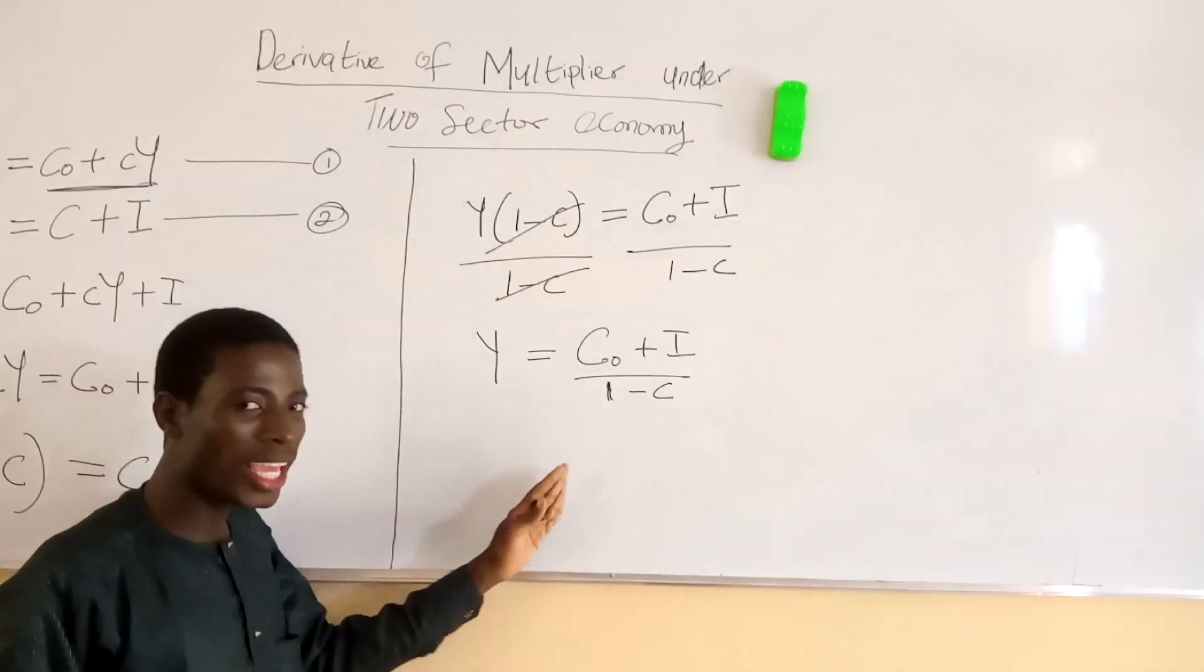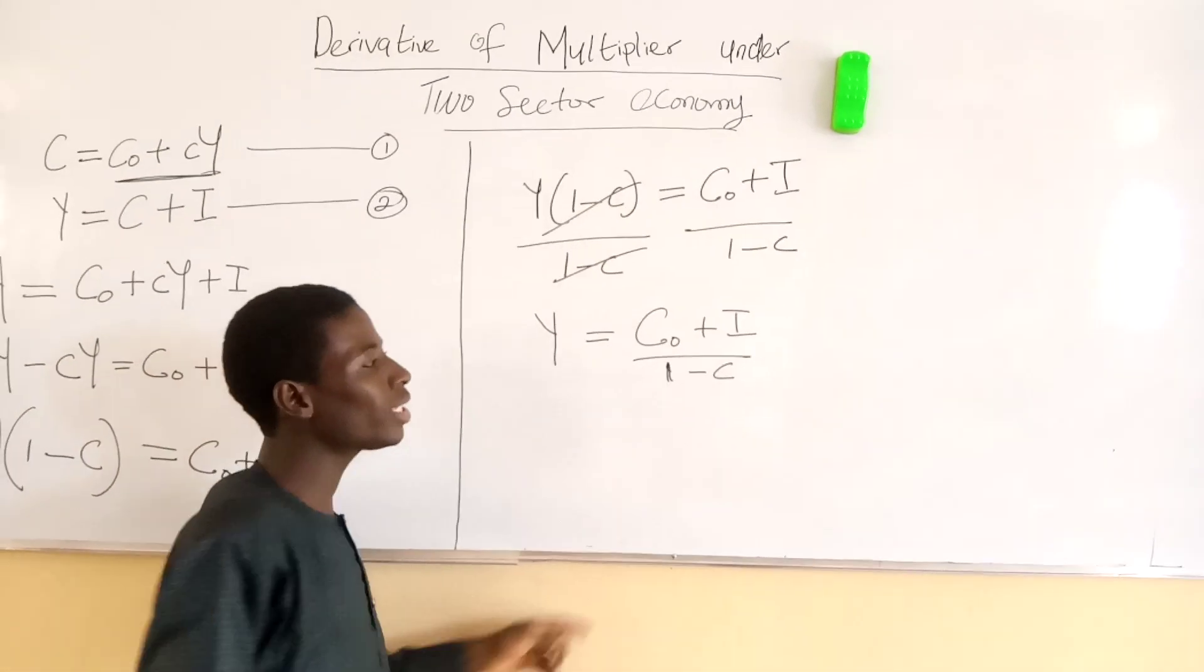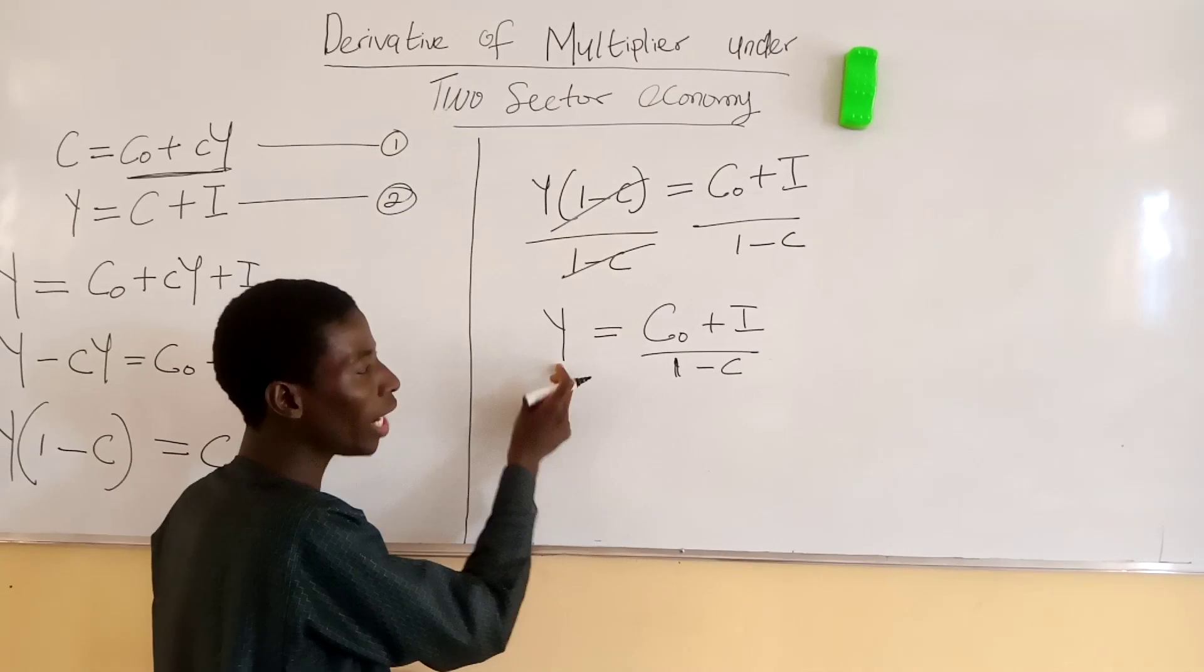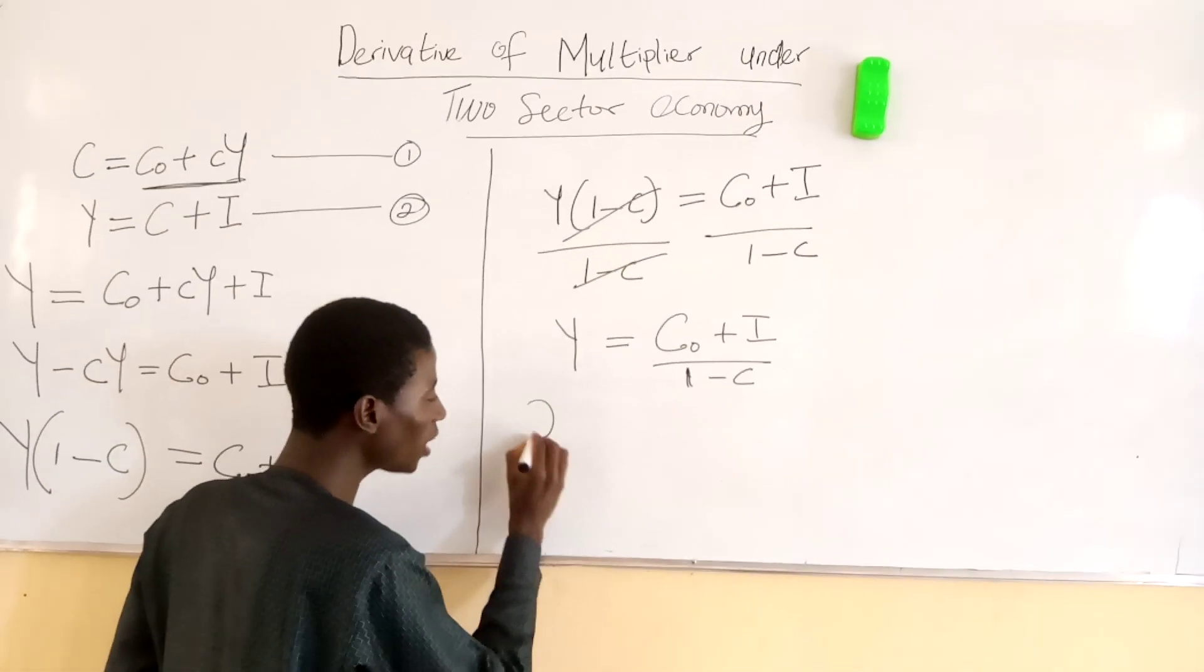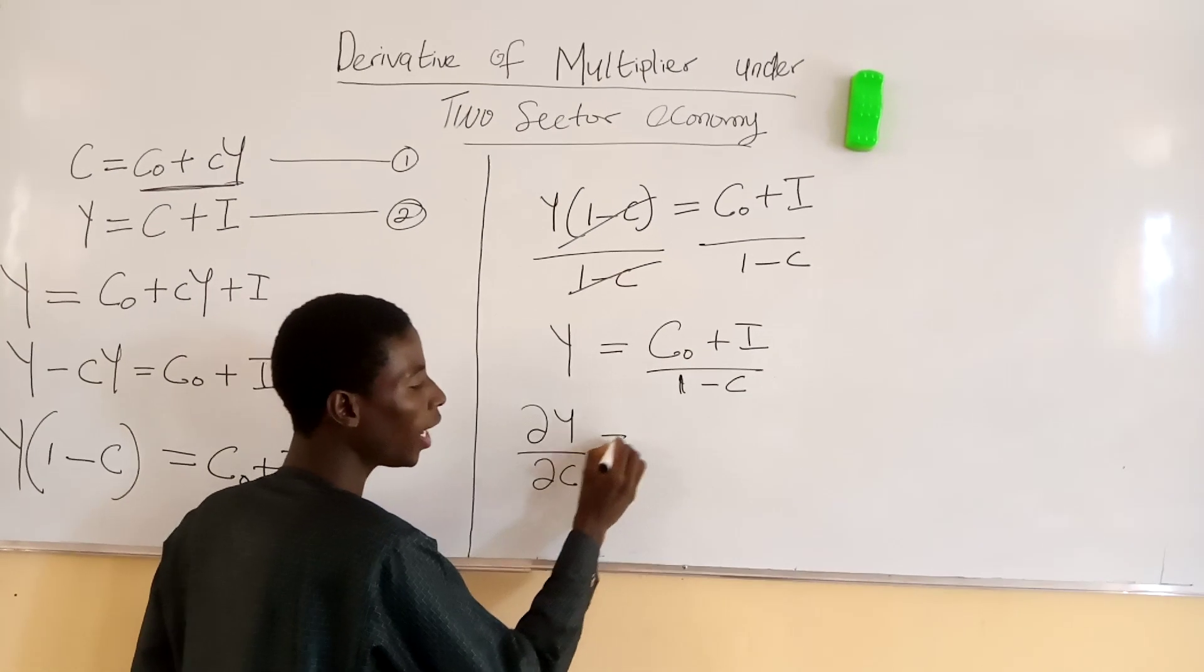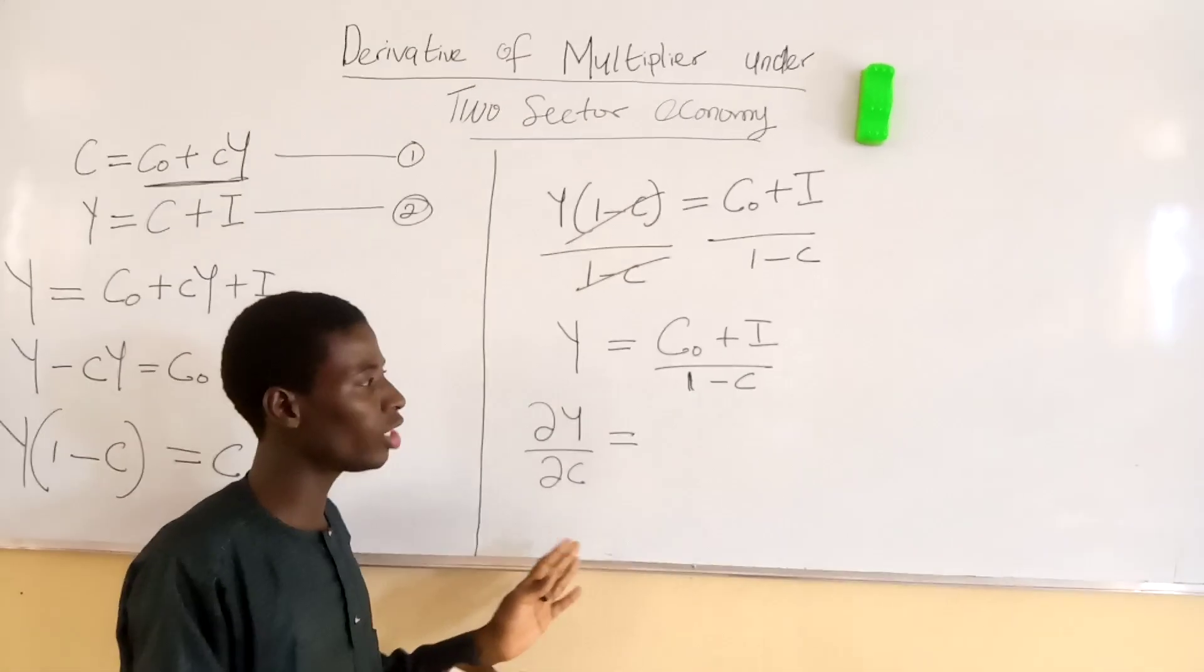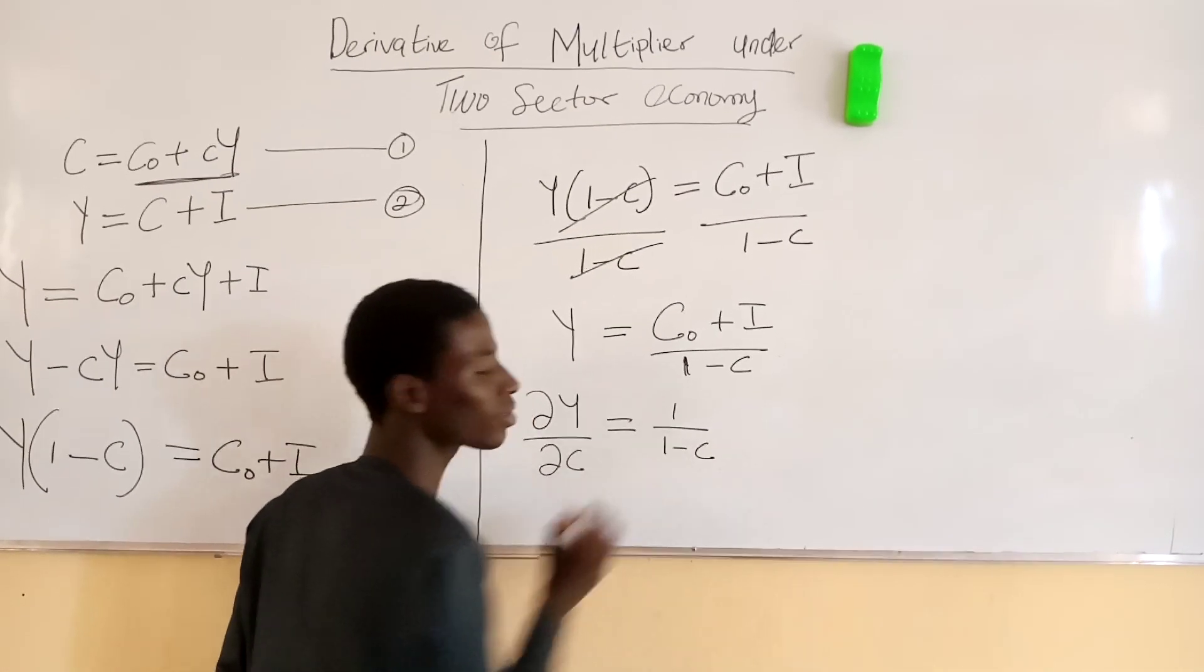From here, we can make a partial derivation. We can differentiate Y in respect to C. This is a partial derivation where differentiation of this gives us one divided by one minus c.